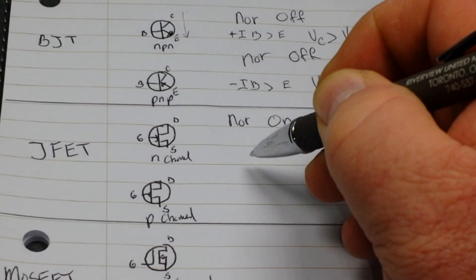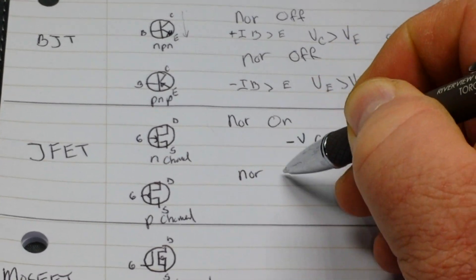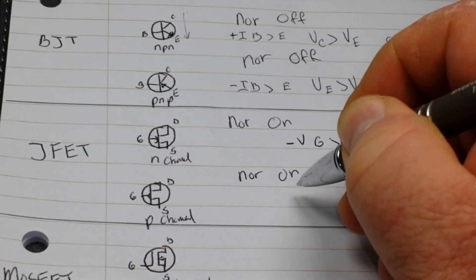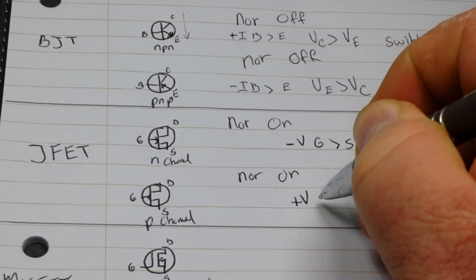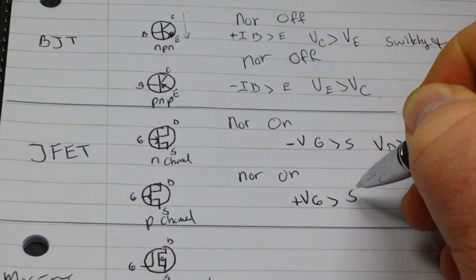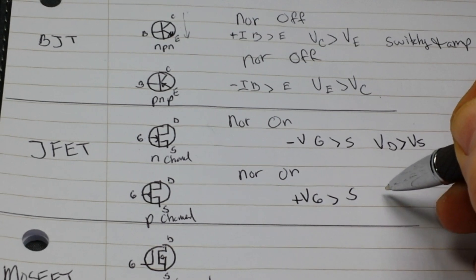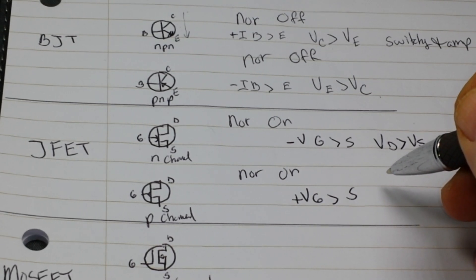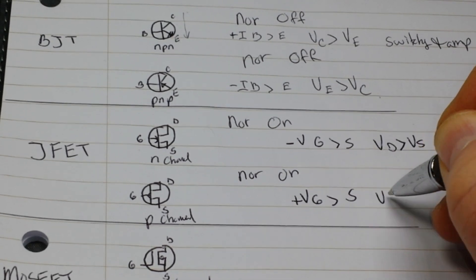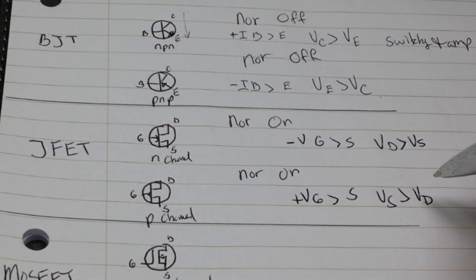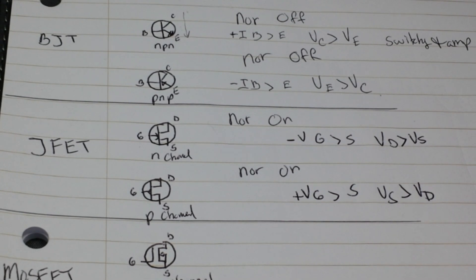Now, the P channel is also normally on. But a small positive voltage at its gate relative to the source stops the current flow. And it operates VS is greater than VD. Again, used in switching and amplification applications.